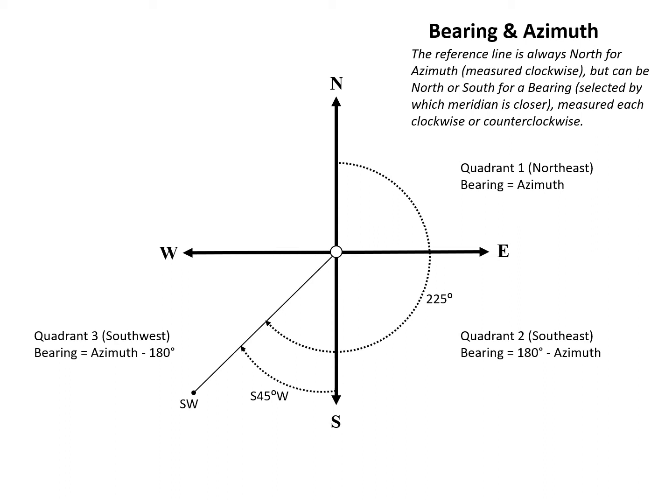In quadrant three, which is the southwest quadrant, the bearing equals the azimuth minus 180 degrees. And we can see in our example here for the southwest line, our azimuth was 225 degrees. So 225 minus 180 gives us a bearing angle of 45 degrees. And again, to complete that, it's south 45 degrees west.